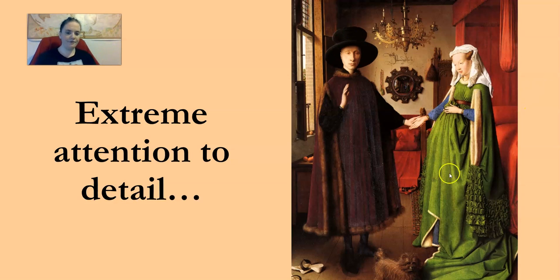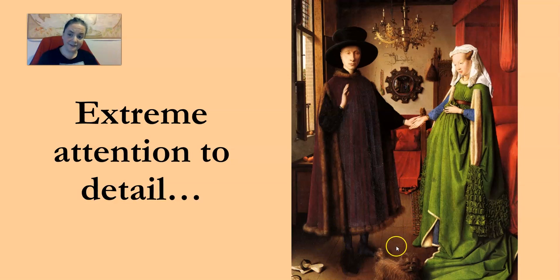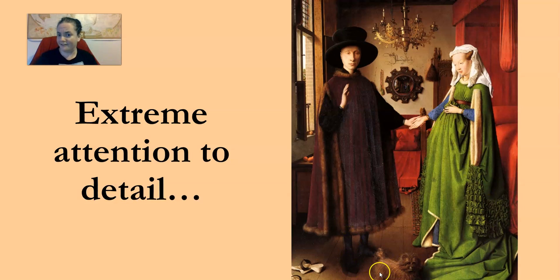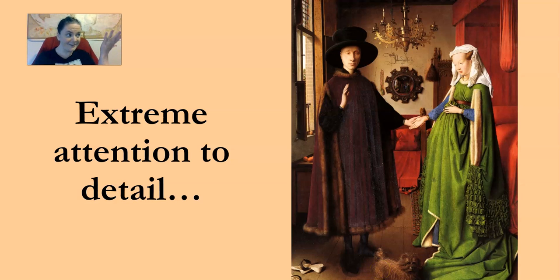In the Arnolfini portrait, you can see all kinds of tiny details. You can see the shadows behind the shoes, the wood paneling in the floor, the individual folds in the bride's dress, the hairs on the tiny dog. Remember, with a painting, someone has to do that. Everything is here on purpose. You can't photobomb a painting.